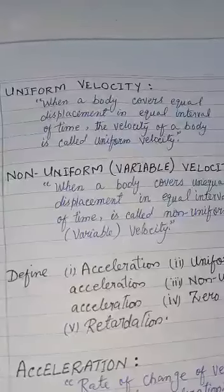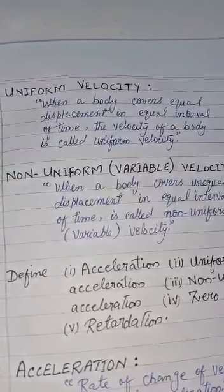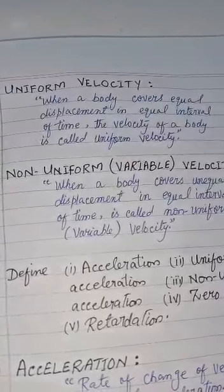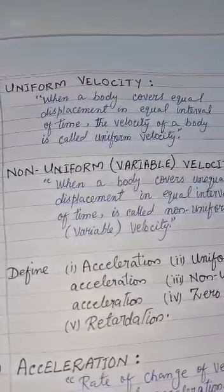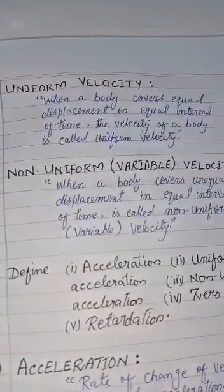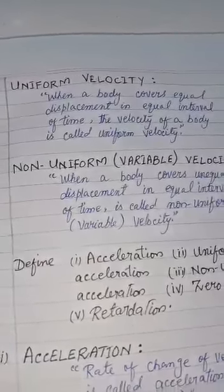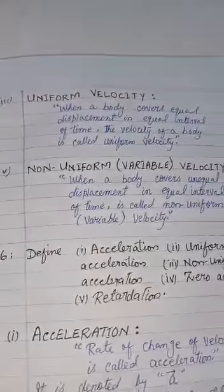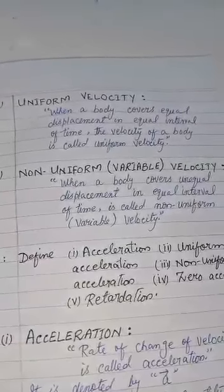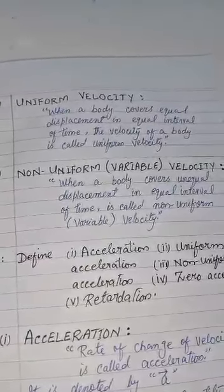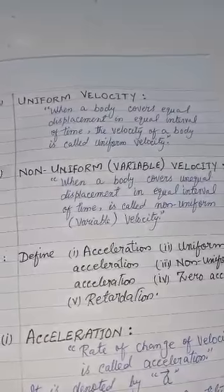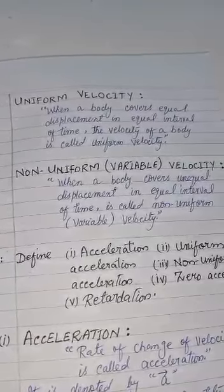Number 3: Uniform velocity. When a body covers equal displacement in equal intervals of time, the velocity of a body is called uniform velocity.